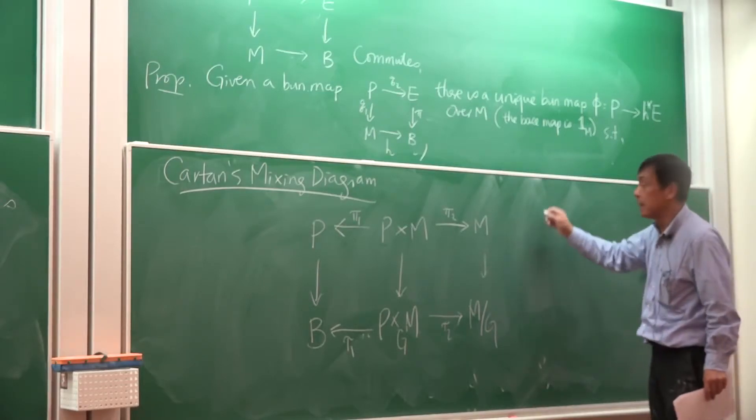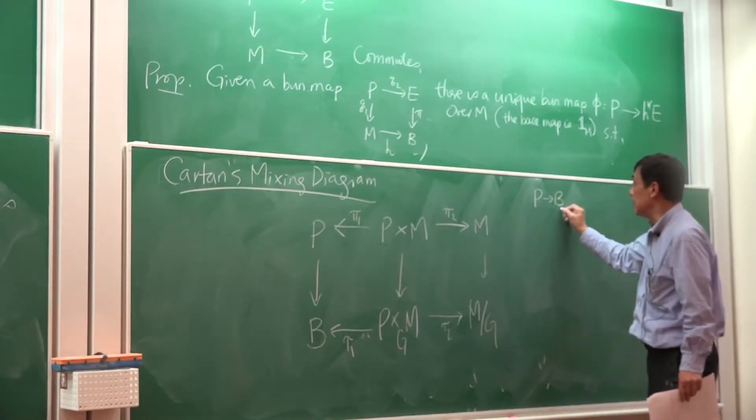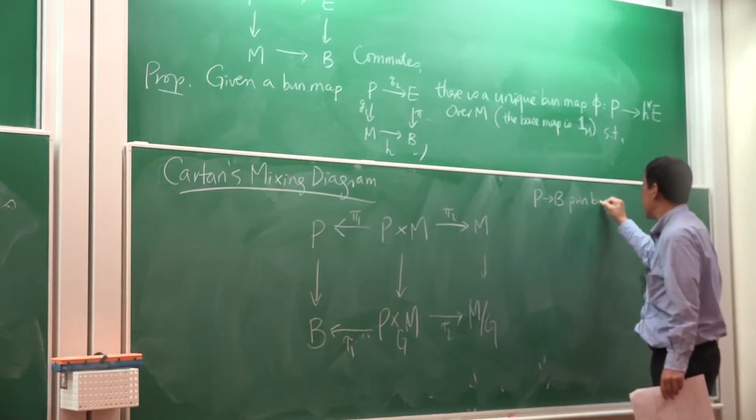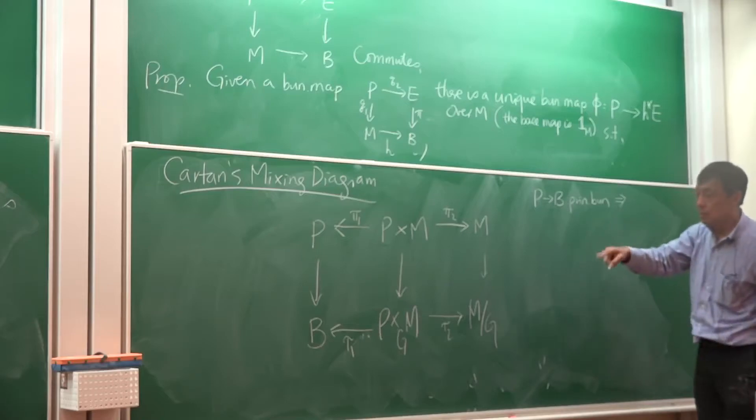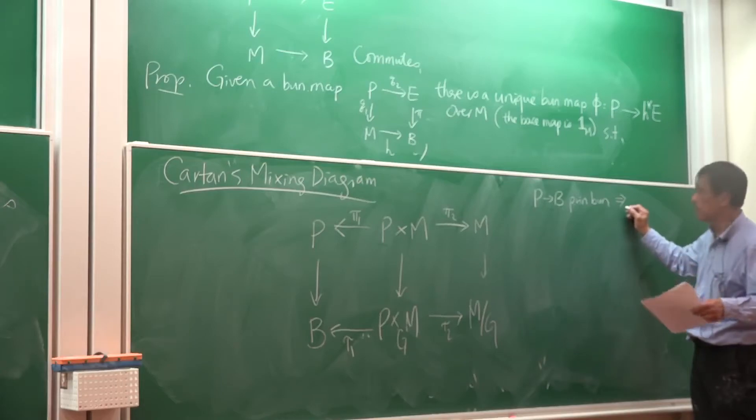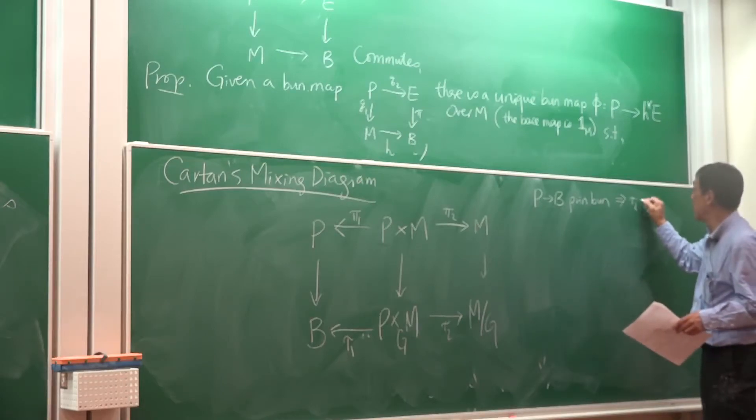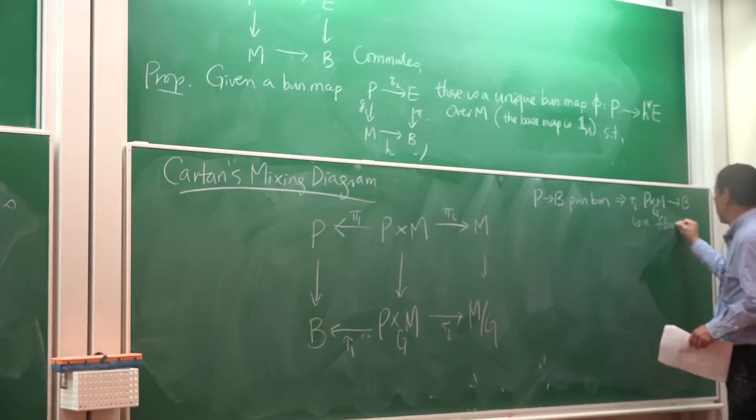And what we know is that this is a principal bundle. Okay, and it implies that tau 2 is a fiber bundle. All right.